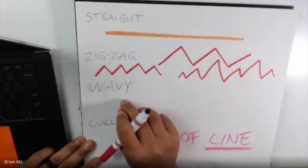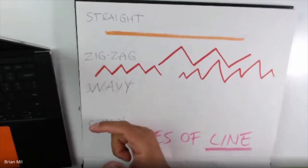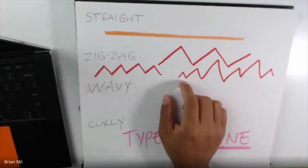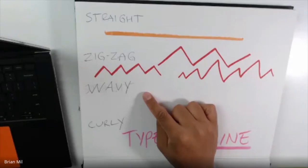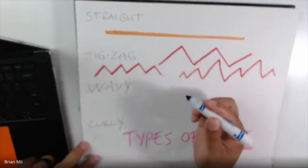All right. The next type of line is wavy. Who can show me with their finger how to draw a wavy line? Anyone want to volunteer and show me how to do a wavy line? Anyone? Okay. I'm going to ask Brianna. Can you unmute yourself, Brianna, and tell me and show me with your finger how to do a wavy line? Say hi. Thanks. Oh, good job. All right. Thank you, Brianna.